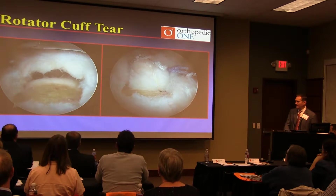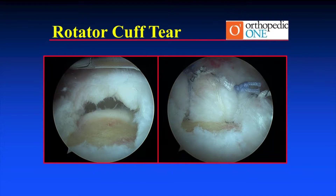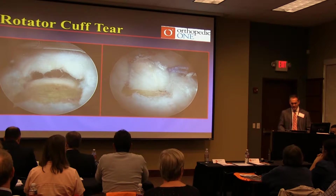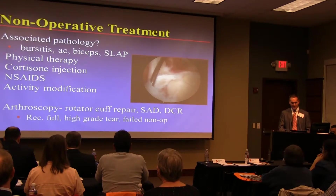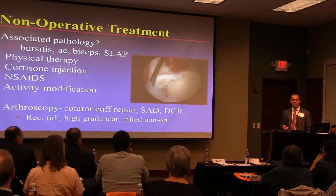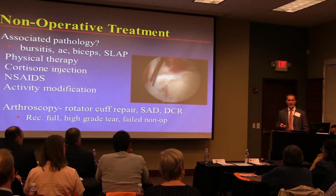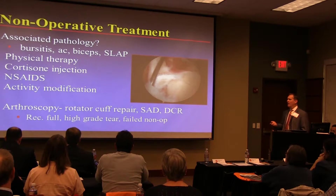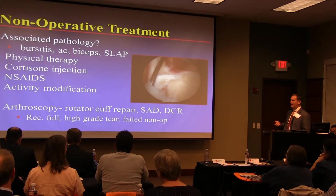With a rotator cuff tear, the question is: do we treat non-operatively? Some argue yes. We'll talk about studies on how to classify who should be treated non-operatively and when to consider a different course. For non-operative treatment, consider associated symptoms — bursitis, AC joint problems, biceps issues, SLAP tear — and patient age. If you have a 45-and-older patient and you're very concerned about their SLAP tear on MRI, you're often barking up the wrong tree. Put all findings together with age, activity level, symptoms, and exam.